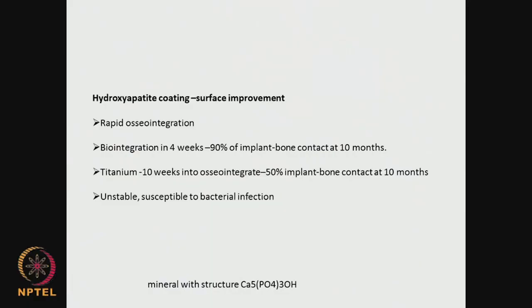Hydroxyapatite coating — this is an inorganic material. It improves the surface property and helps for osteointegration. For example, if you use stainless steel it is very inert and the bone cells do not integrate. Whereas when coated with hydroxyapatite, it helps in osteointegration. There is an example: 90% of the implant gets biointegrated with the bone in 10 months contact. Whereas with pure titanium without any HA coating, only 50% of the implant makes contact in 10 months. Hydroxyapatite is much better.